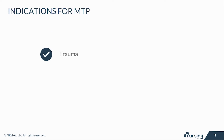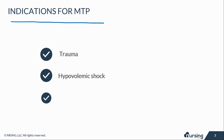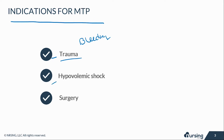So why would somebody need MTP? Well, obviously trauma would be a big cause. Think of somebody that's in a motor vehicle accident and has had pretty significant trauma and they are bleeding everywhere. Or somebody who is in hypovolemic shock because of hemorrhage, somebody who's had a GI bleed or a ruptured aortic aneurysm.